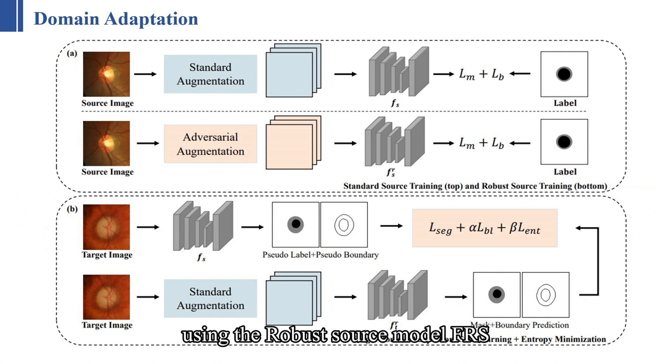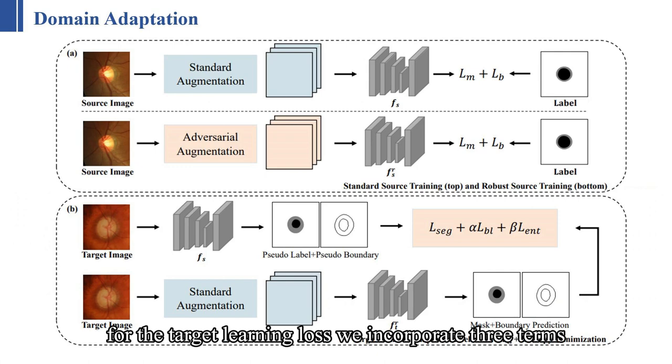using the robust source model, FRS. The pseudo-labels and pseudo-boundaries previously generated by FS now act as a self-supervised signal for FRT when fine-tuning on the target data. For the target learning loss, we incorporate three terms.